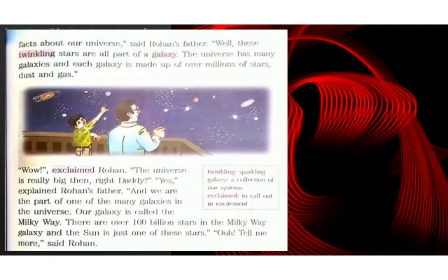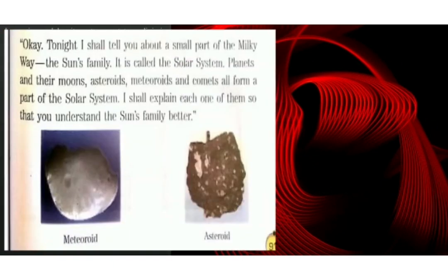'There are over 100 billion stars in the Milky Way galaxy, and the Sun is just one of these stars.' 'Oh! Tell me more,' said Rohan. 'Okay! Tonight I shall tell you about a small part of the Milky Way — the Sun's family. It is called the Solar System. Planets and their moons, asteroids, meteoroids and comets all form a part of the Solar System. I shall explain each one of them so that you understand the Sun's family better.'